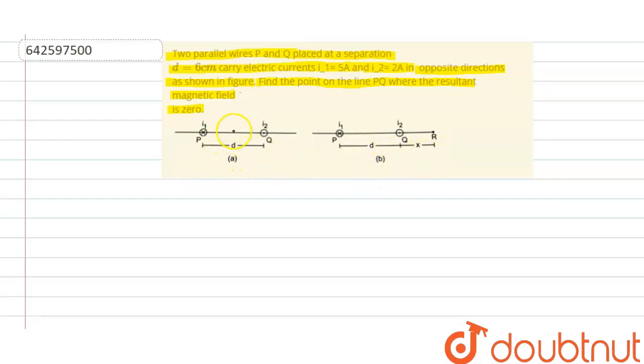So the point either can be between P and Q, or the point can be at the R point, which is on the right-hand side of the Q point. So we need to find out the value of where the point is situated where the magnetic field is zero.